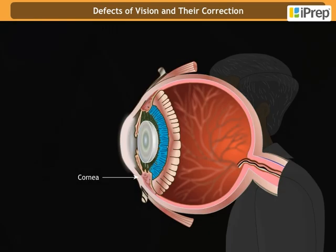Cataract: in old age, the cornea becomes cloudy, which reduces vision. In the early stages of the disease, cataract can be cured by eye surgery. Sometimes an artificial lens is also transplanted during cataract surgery, which is called intraocular lens transplantation.